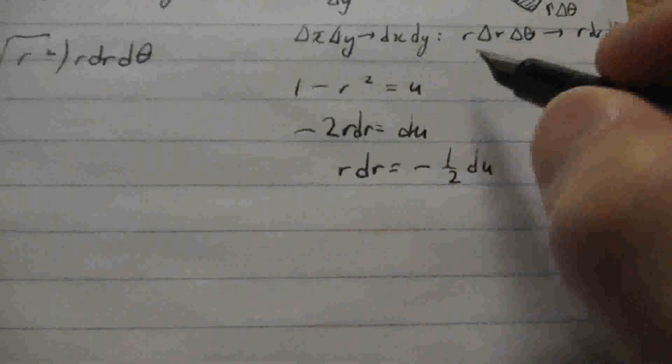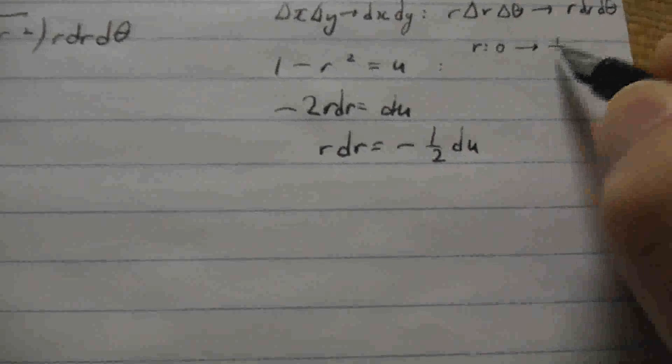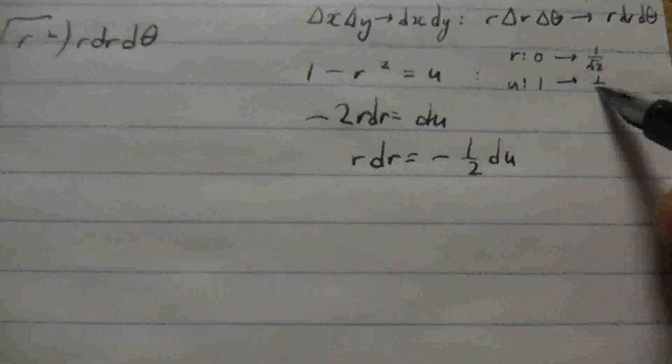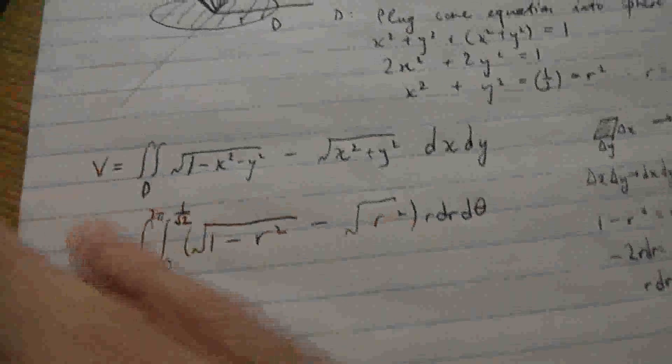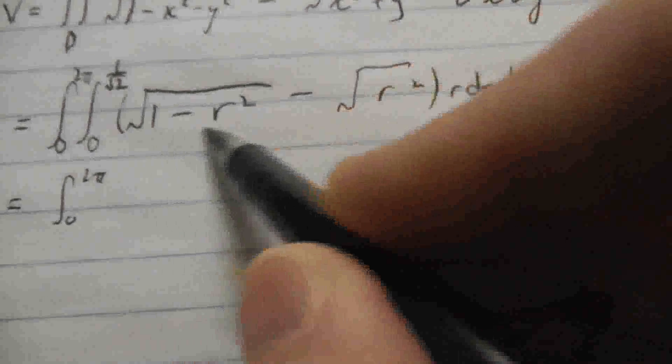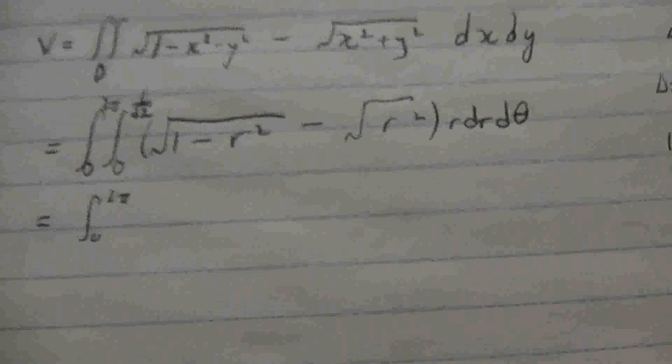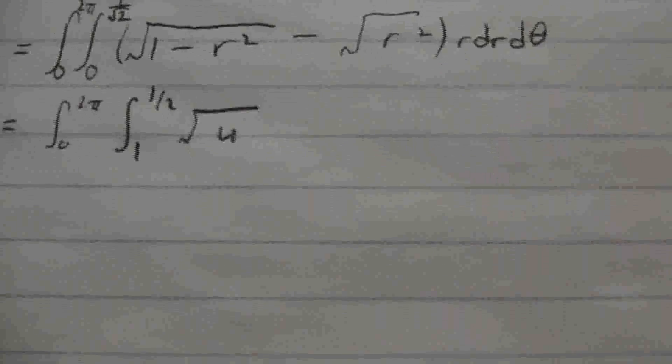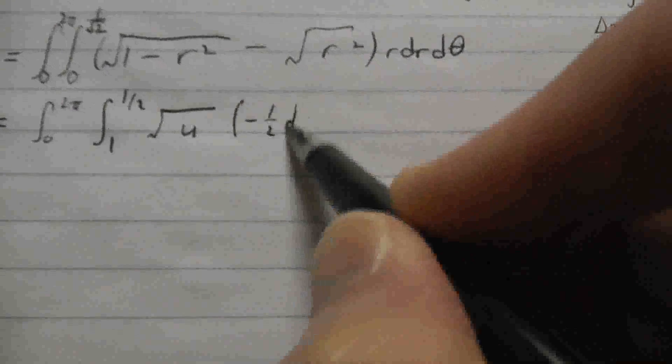Because it's a definite integral, we should also think about the bounds. So r goes from 0 to 1 over root 2. u will go from, when r is 0, u is 1. When r is 1 over root 2, then u is 1 minus the square of 1 over root 2, which is 1 half. So u will go from 1 to 1 half. So this becomes, I'm just working with this first term, and I'm not worrying about the second one just yet, because we don't need to make a substitution in the second case. So if we rewrite this first integrand, it's going to be the integral from 1 to 1 half of the square root of u. And r dr d theta, but r dr as we know is minus 1 half du. So minus 1 half du.